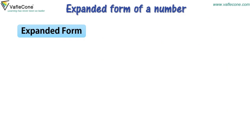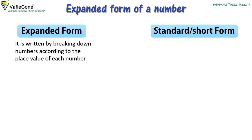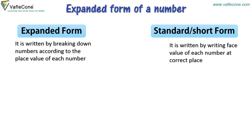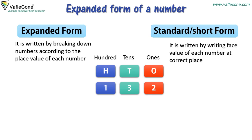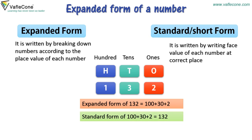Expanded form: it is written by breaking down numbers according to the place value of each digit. Standard or short form: it is written by writing the face value of each number at the correct place. Here, expanded form of 132 is 100 plus 30 plus 2, and standard form is 100 plus 30 plus 2 equals 132.